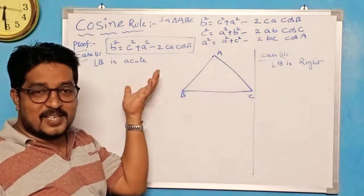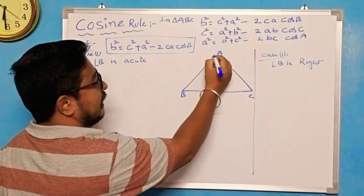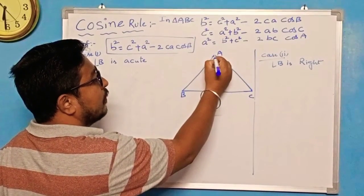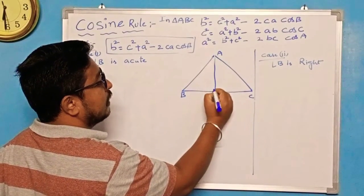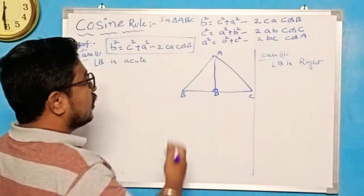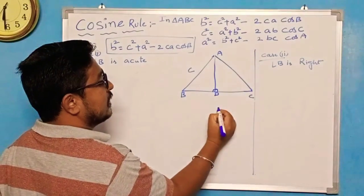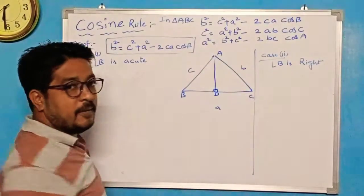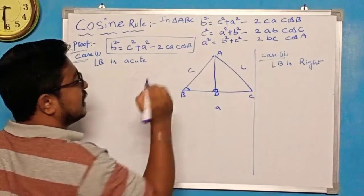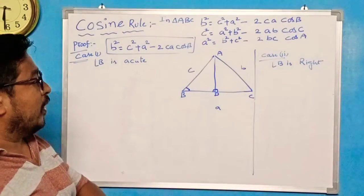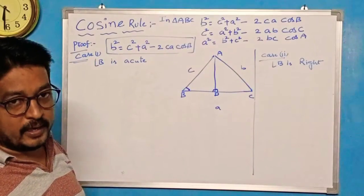Now I will prove for angle B being an acute angle. If angle B is an acute angle, I draw a perpendicular from vertex A to side BC. Draw AD perpendicular to BC. The notations are: AB = c, BC = a, AC = b. Now take angle B as an acute angle — triangle ABC is an acute angle triangle.